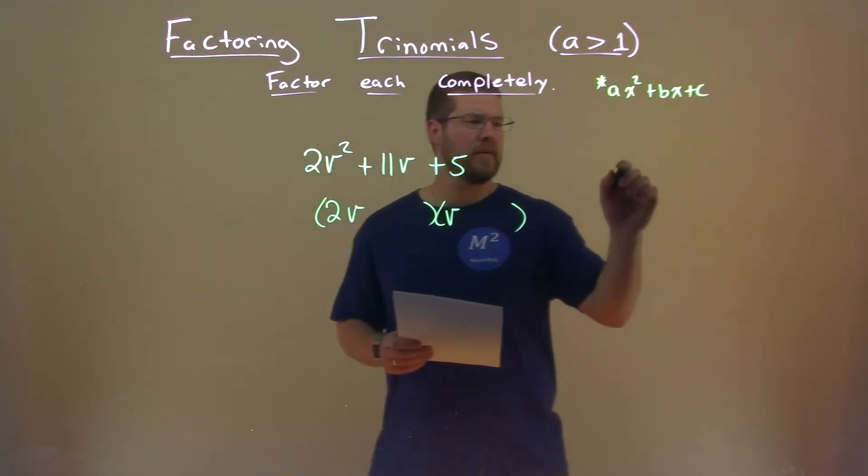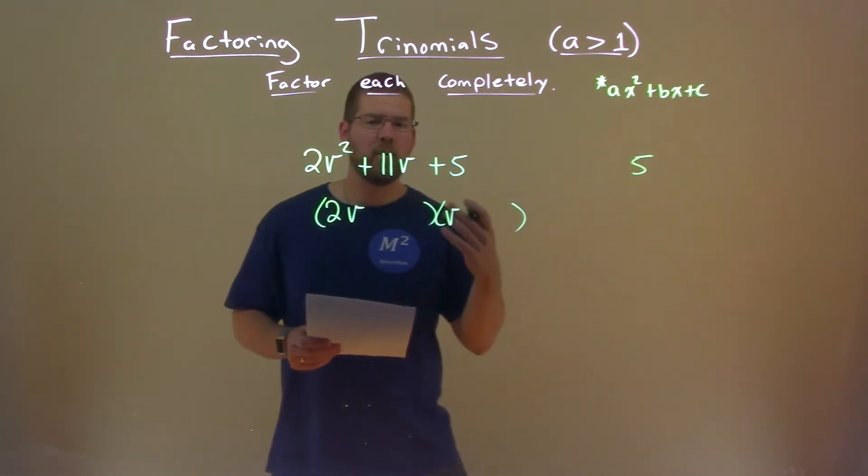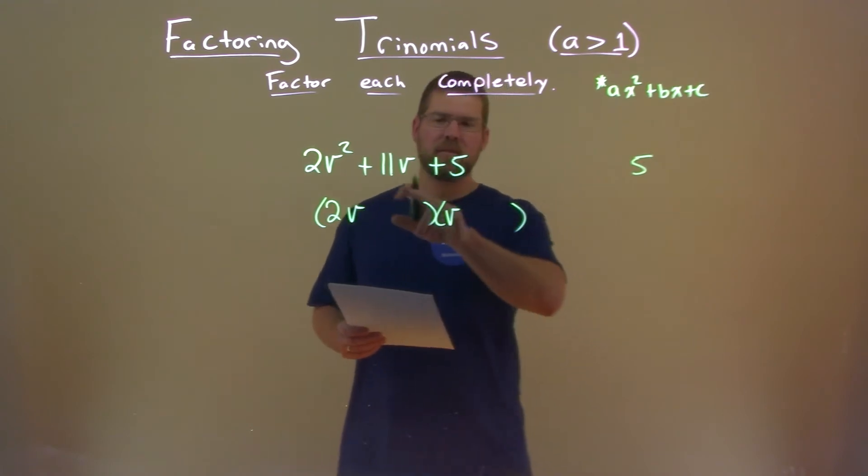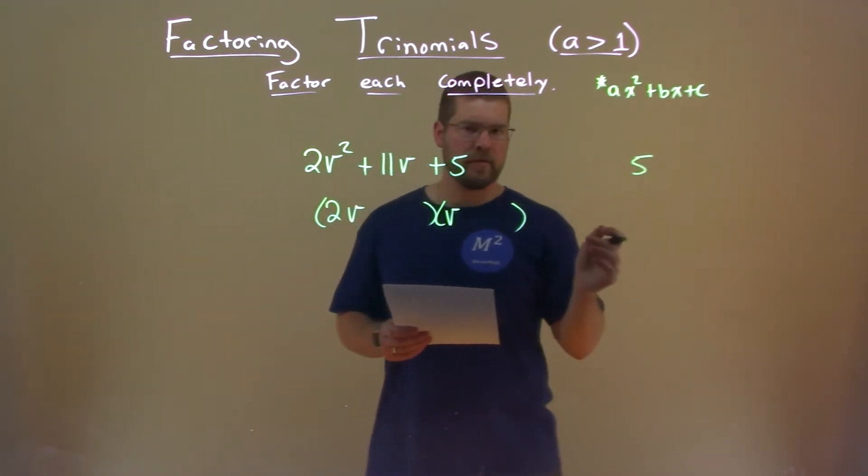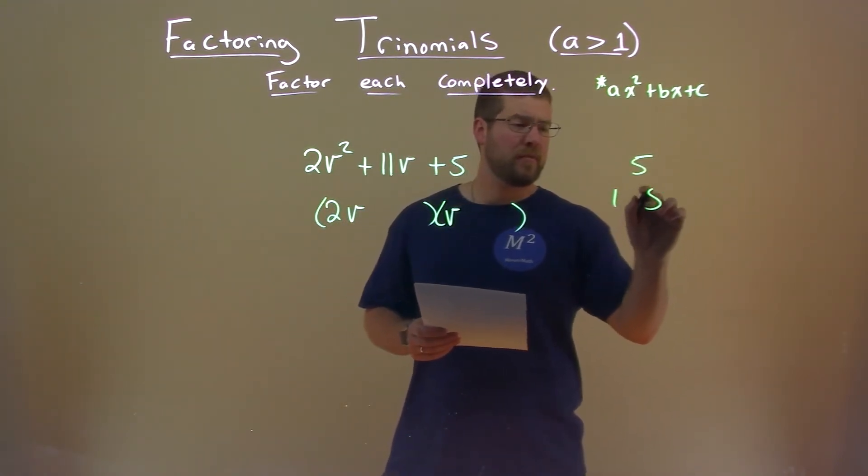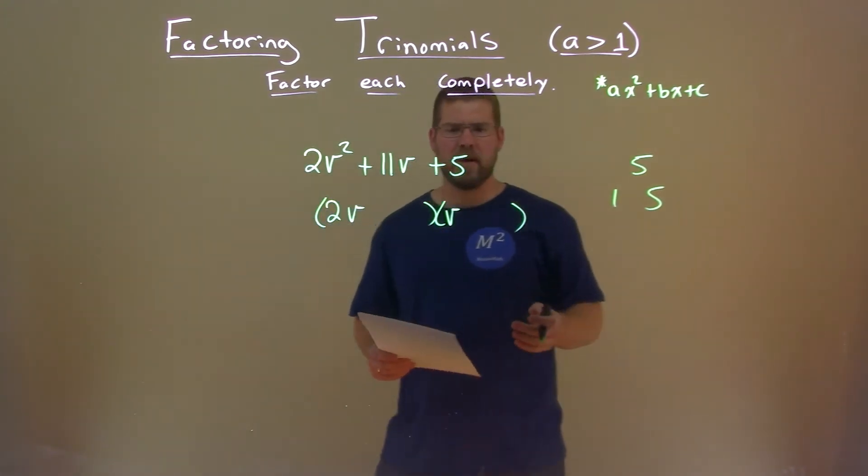We then look at the c value, which is 5. We have to find what two numbers multiply to be 5, and since the b value is positive, they're both going to be positive. And that's just 1 and 5, or 5 and 1. The order doesn't really matter right now.